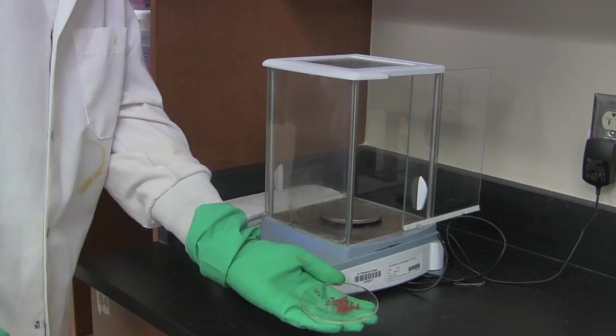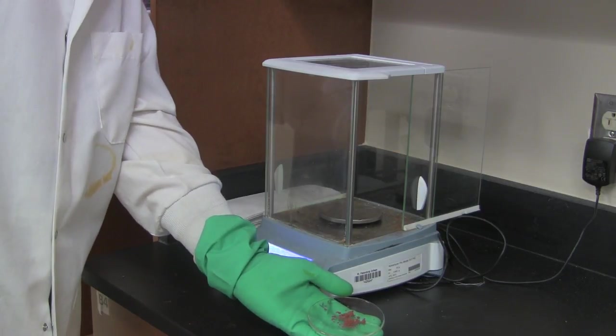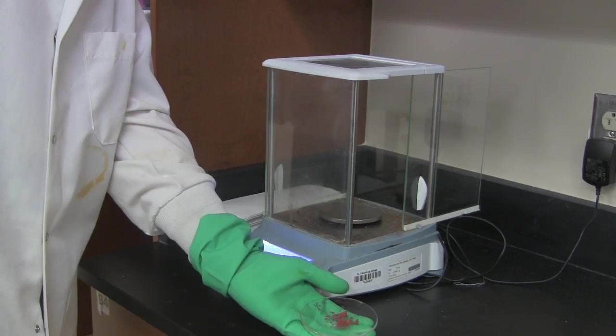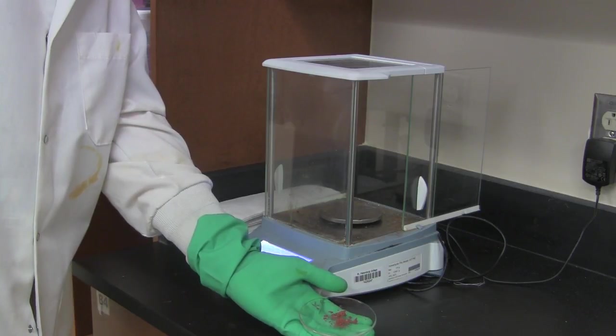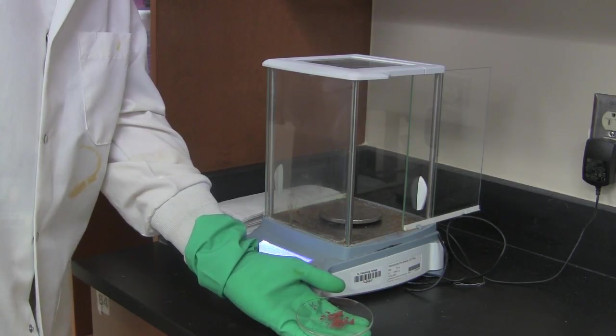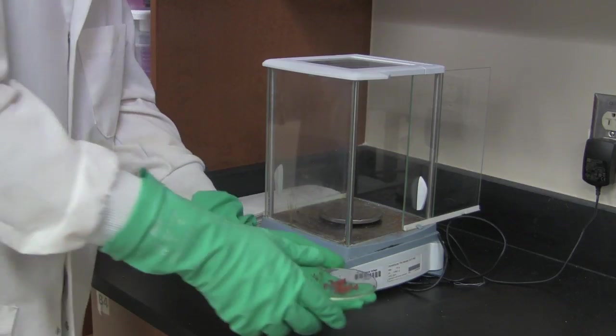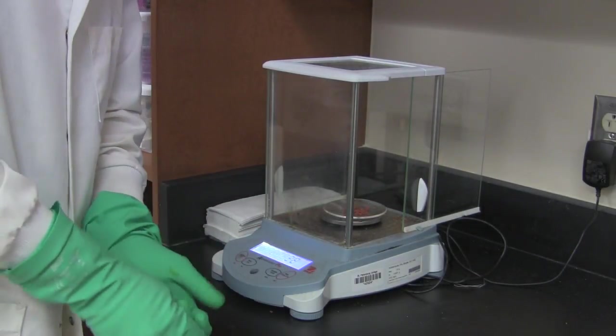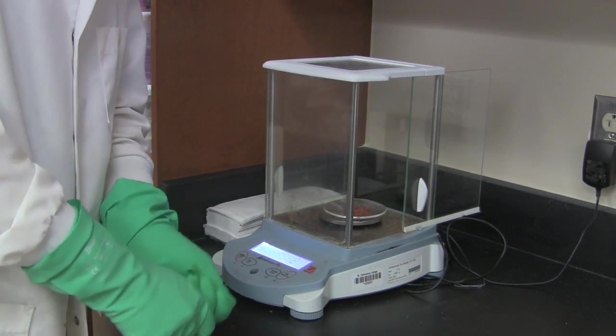Alright, so now we've got our copper. It's been dried and I've taken it out of the oven. And I've let it cool for a few minutes. It's never a good idea to weigh anything while it's hot. So, it's been taken out of the oven. It's been cooled for a bit. And now what I'm going to do is weigh it on the balance. And that's going to allow us to come up with our mass of copper.